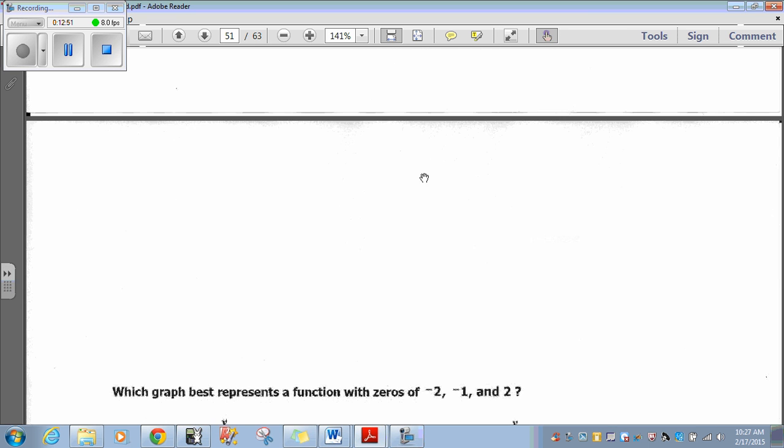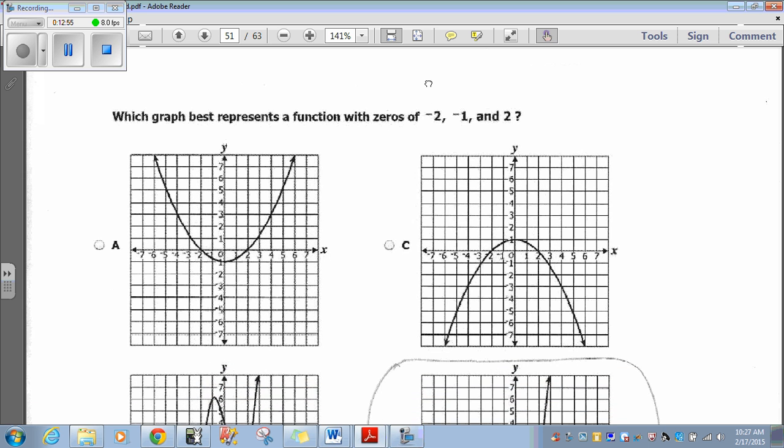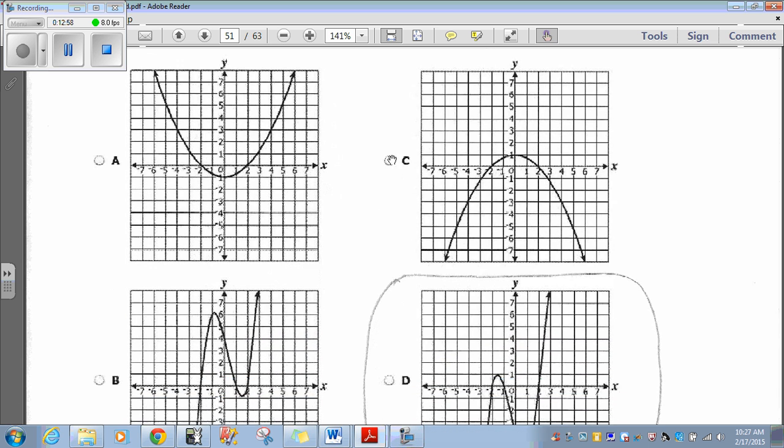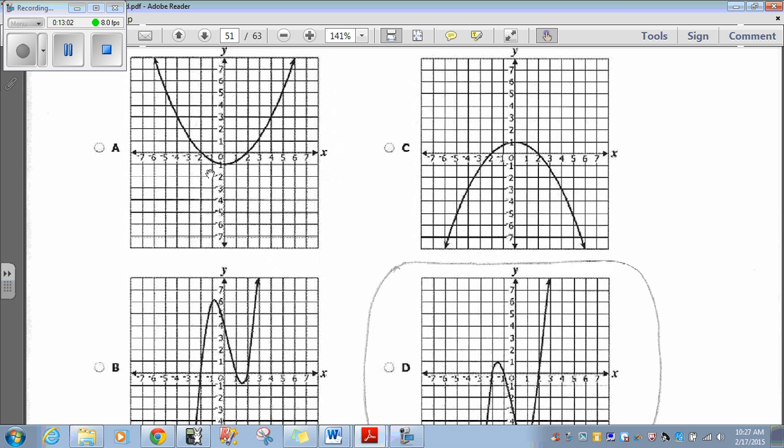Question 47. Which graph best represent a function with zeros of negative 2, negative 1, and 2? Well, we're looking for 1, 2, 3 zeros. That has two zeros, so nope. That has two zeros, so nope.